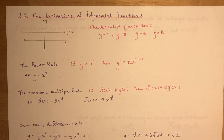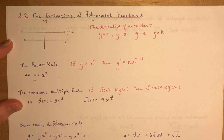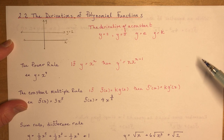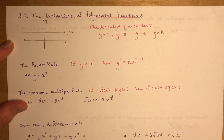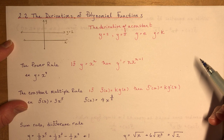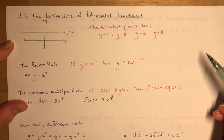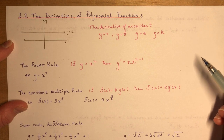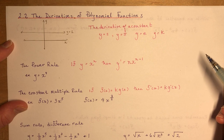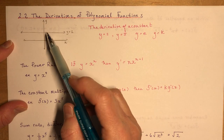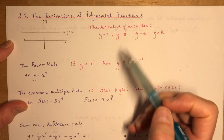Section 2.2: the derivatives of polynomial functions. We're going to look at all sorts of different rules for polynomial functions. It gets a little more difficult when we have to find equations of tangents. At the end of this lesson, I'm going to do probably the hardest question you'll see in this section — finding the equation of a tangent to a point that's not on the curve. So hang in to the end.